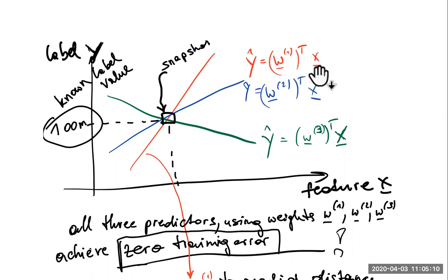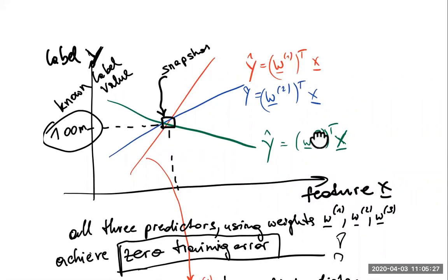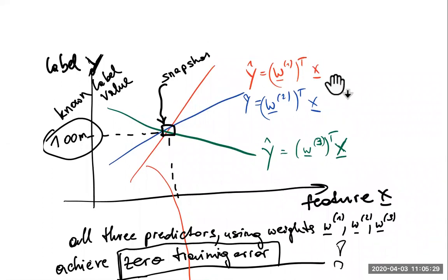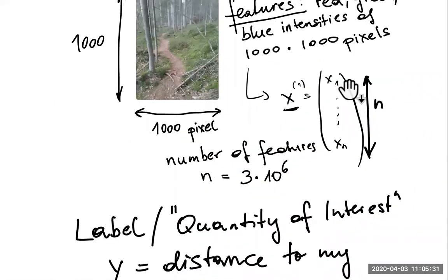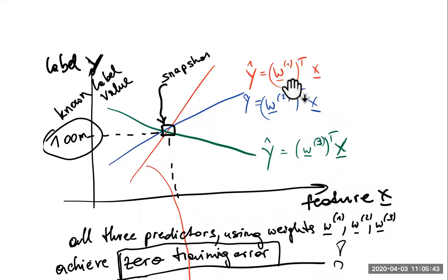A very simple but powerful class of methods is based on linear predictors. We make this mapping using an inner product — a weighted sum of features — so w-transpose x means we weight each feature x_1 by w_1, up to x_n by w_n, and sum up these weighted features. That is what this shorthand notation means.